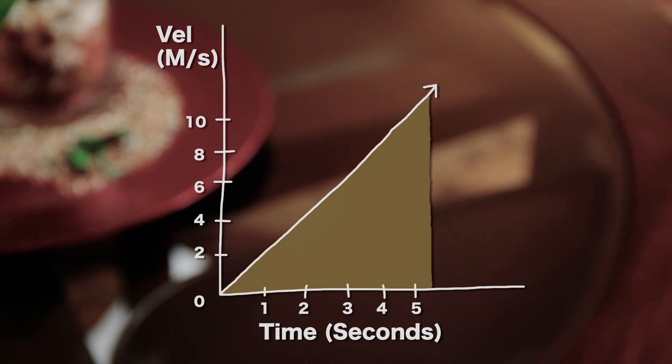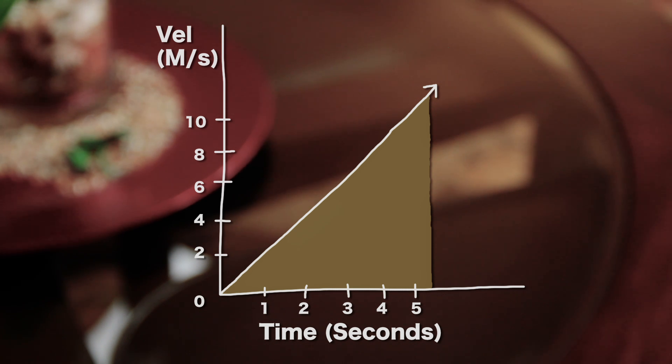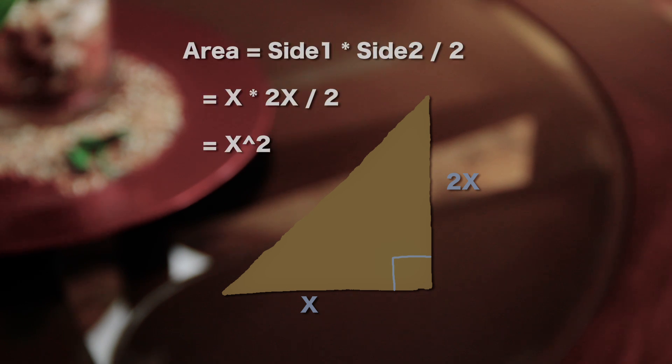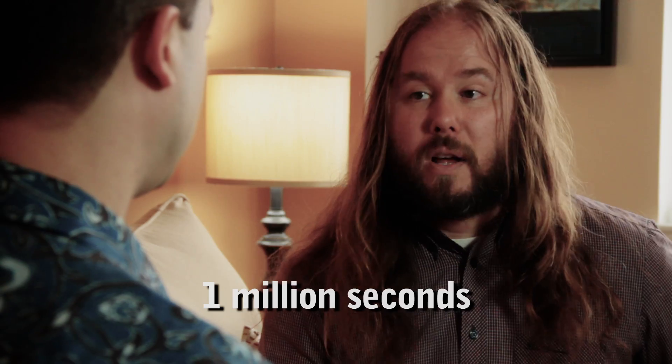That still doesn't seem like a big deal. It doesn't? Well, to get the distance traveled, you draw a graph of the velocity over time and take the area under the curve. In this case, the graph is a straight line with slope 2. So the formula ends up being y equals 2x, where x is time and y is velocity. Thus, the area under the curve is a triangle with legs x and 2x. So the area of that triangle is x times 2x divided by 2, which is x squared. And the rock starts out 1 trillion miles away.